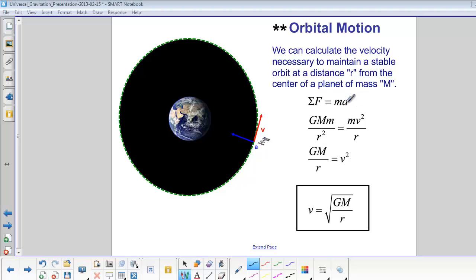And our a, since our object is in circular motion, is equal to v squared over r. We can cancel out one of the r's, and we can also cancel out m. So we end up with GM over r equals v squared.